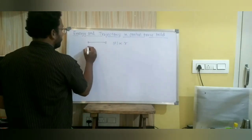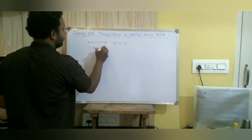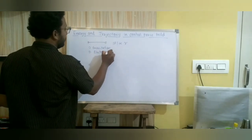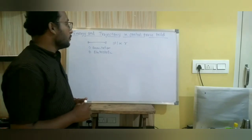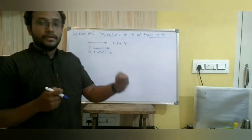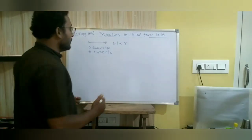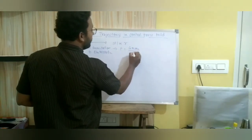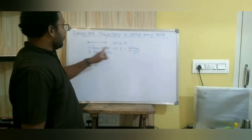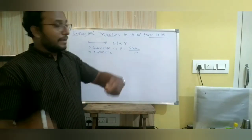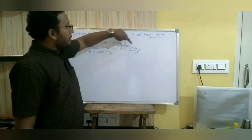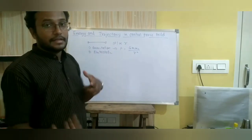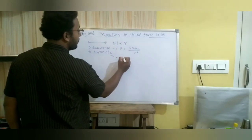Examples of central forces are very simple: gravitational force and electrostatic force. If I take any two objects having masses m1 and m2, the gravitational force can be written as G·m1·m2 divided by R². The gravitational force acts only along the line joining the two objects, and for a given pair of masses it is inversely proportional to the square of the distance — that is why it is a central force.